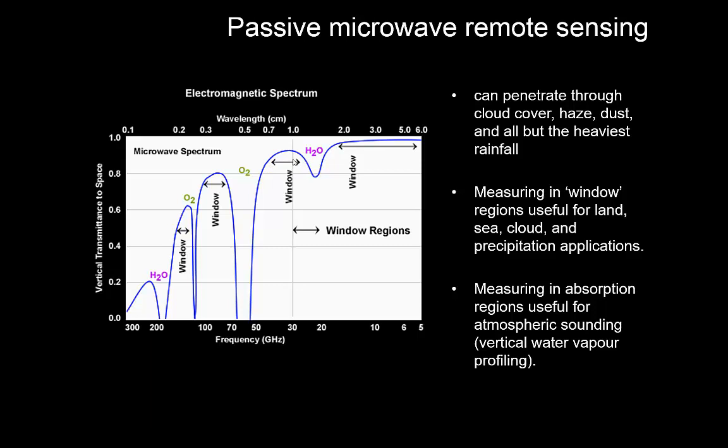A good thing about microwave radiation, it doesn't really mind a cloud or things like that so that's a big benefit over optical remote sensing which tends to become pretty useless once there's a cloud within the field of view. Microwave suffers from that much less.